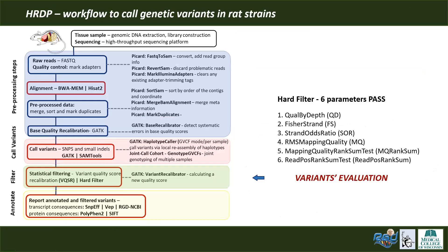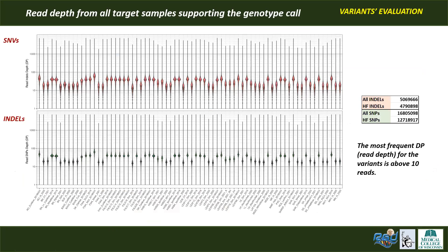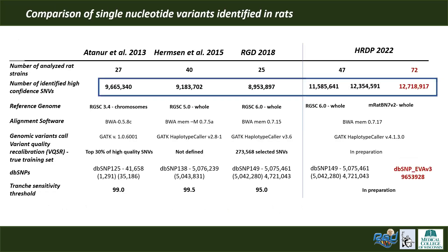In the process of variant quality assessment, we applied hard filtering methods, so each variant must pass six parameter thresholds. After applying those filters, the total number of variants dropped, and only variants supported by more than 10 reads were selected as the high-confidence variant set. Comparing our results with previous studies, we see a nice increase in variant numbers by defining a bigger population of rats, giving us higher-number and more complete datasets.